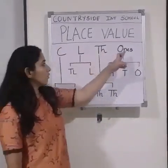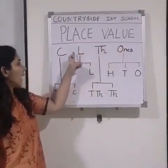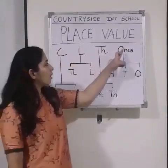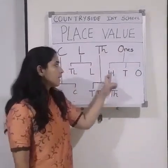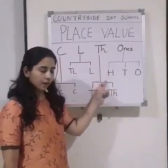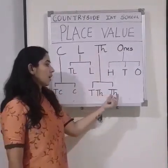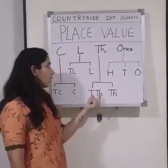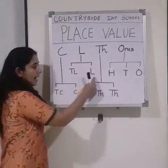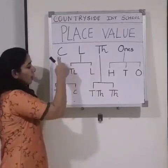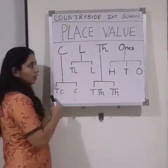These are the families of place values: ones, thousands, lakh, and crore. The family of ones is divided into 3 parts: 1s, 10s, 100. The family of thousands is divided into 2 parts: 1,000 and 10,000. The lakh family is divided into 2 parts: lakh and 10 lakh. The crore family is also divided into 2 parts: crore and 10 crore.